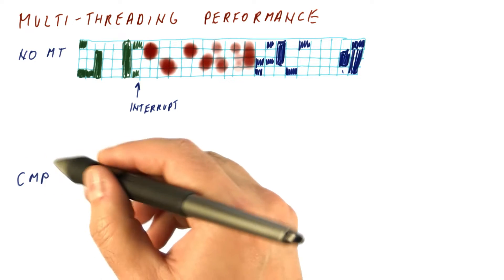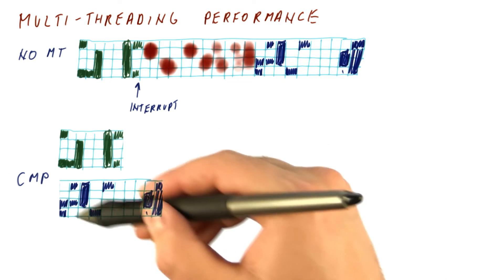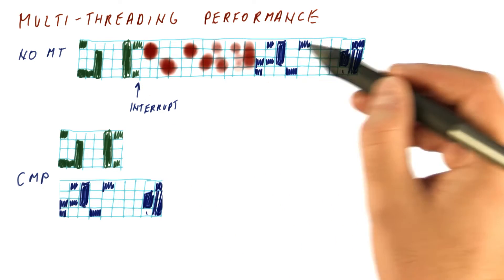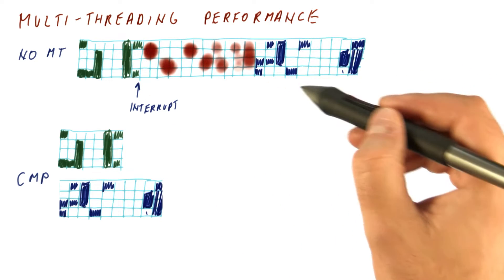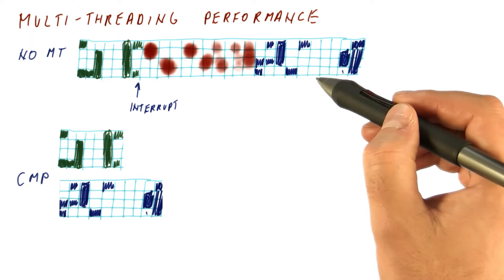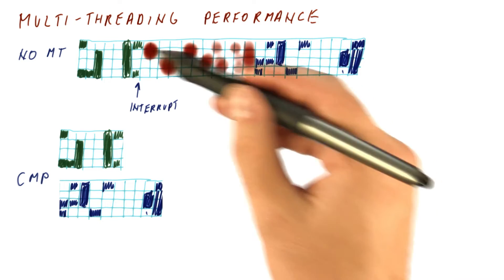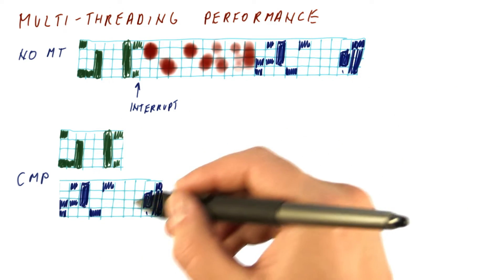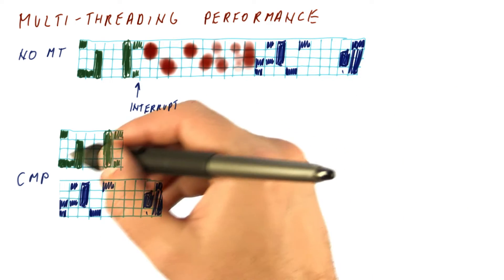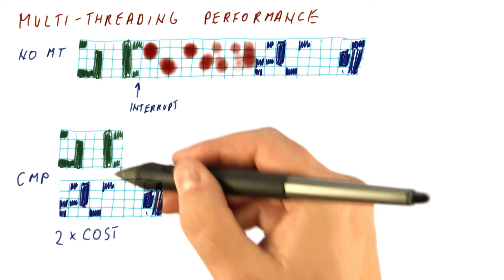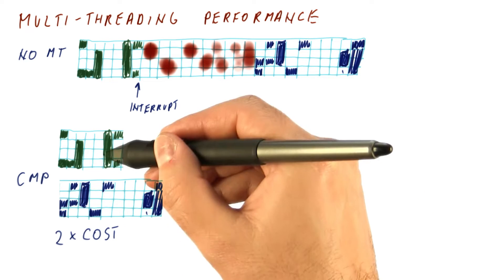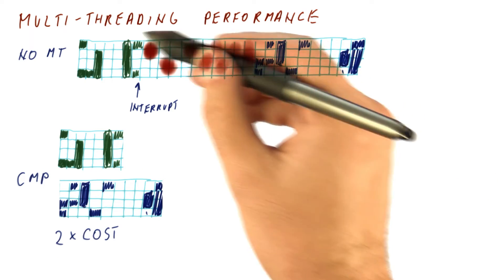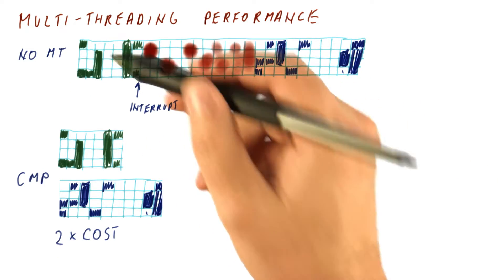If we have a chip multiprocessor, we get to do something different. Now we have two cores, each of which gets to execute one thread. So it's faster, of course, and we can truly benefit from writing multi-threaded programs. But you have to have two cores for it, so the cost is about twice the cost of a single core.